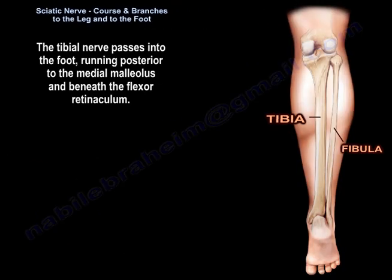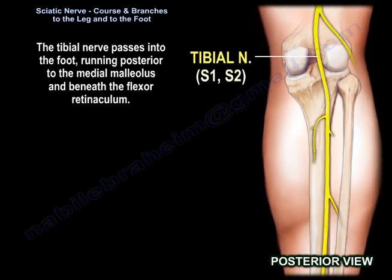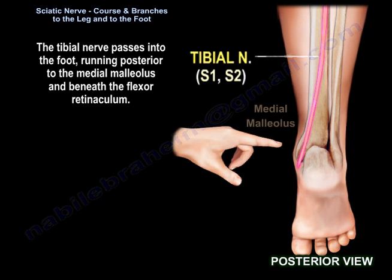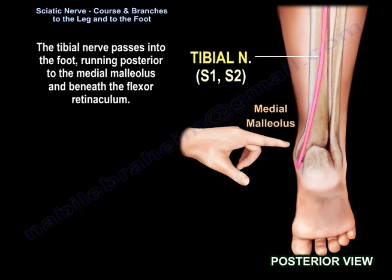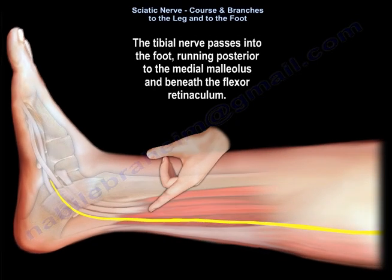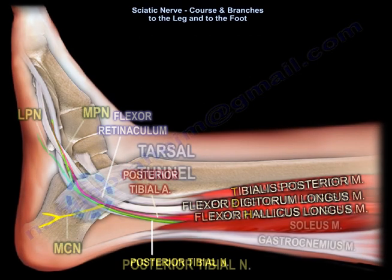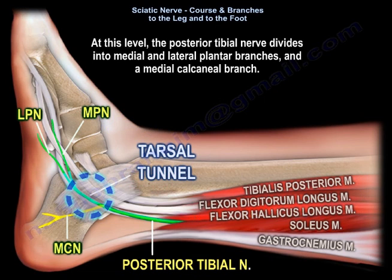The tibial nerve passes into the foot running posterior to the medial malleolus and beneath the flexor retinaculum. At this level, the posterior tibial nerve divides into medial and lateral plantar branches and a medial calcaneal branch.